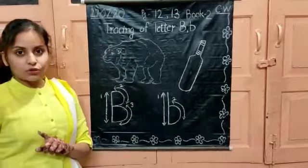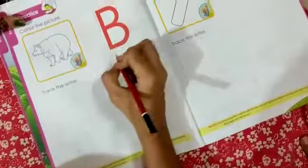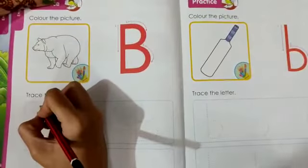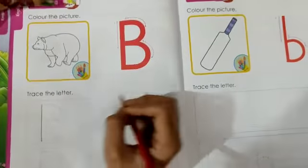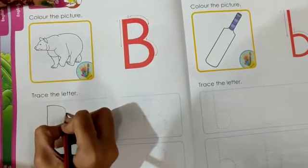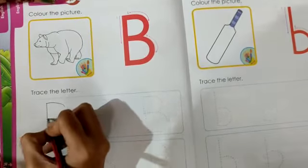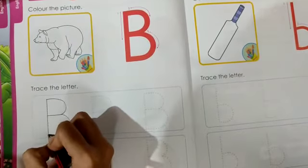Now we will come to the book to explain the same. On page number 12, you will be doing the tracing of capital B. First of all, hold the pencil properly and then draw the standing line in this way. Trace it dot to dot. And then the first left open curve, and then the second left open curve. This is capital B.